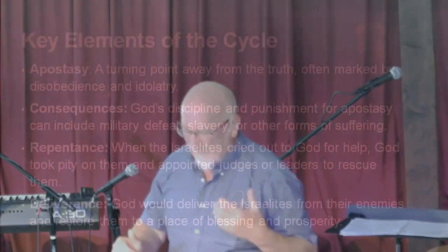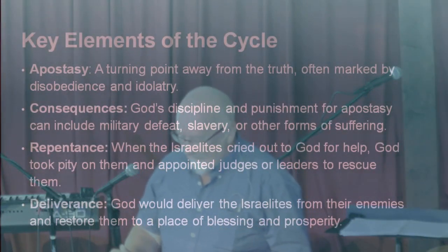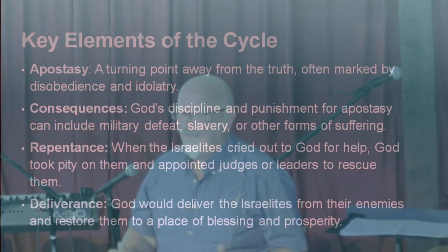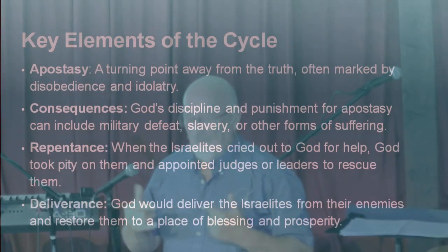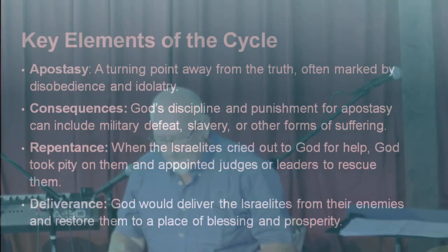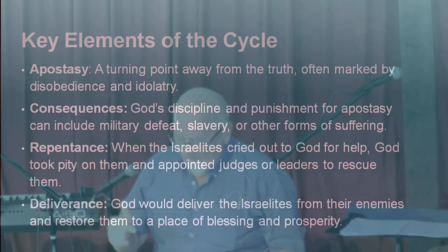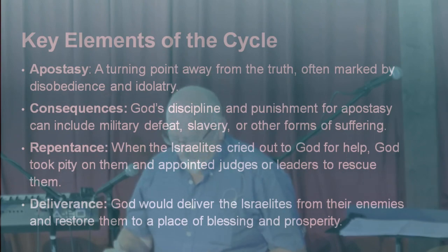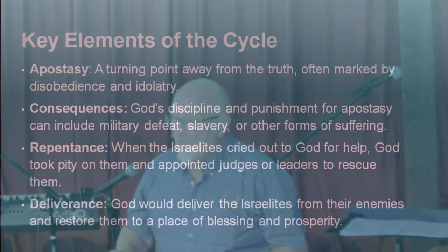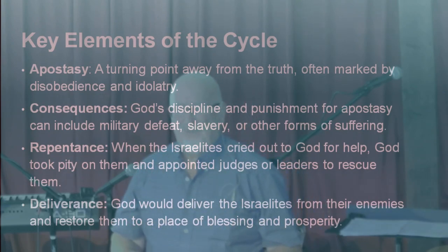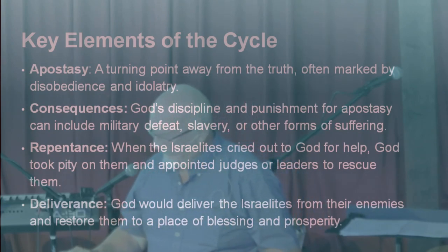So let's look at the key elements of this apostasy. Turning away is marked from truth by disobedience and idolatry. We have in our country so many things going on. The consequences are God's discipline, and if and when we repent, we will turn around. So what state is Canada in? I think we probably know, but I want to detail some of the things that are going on.